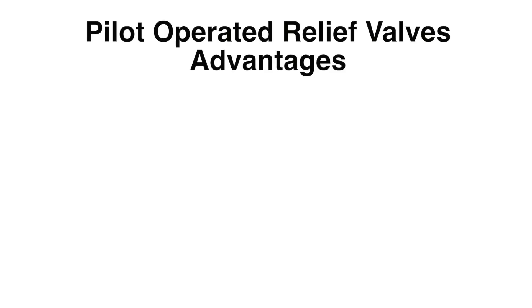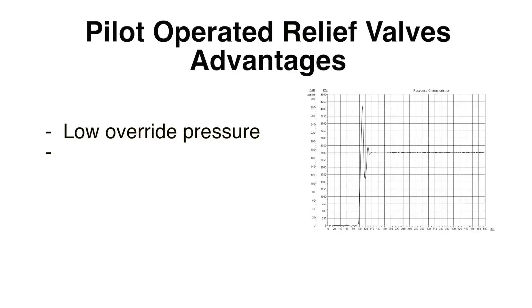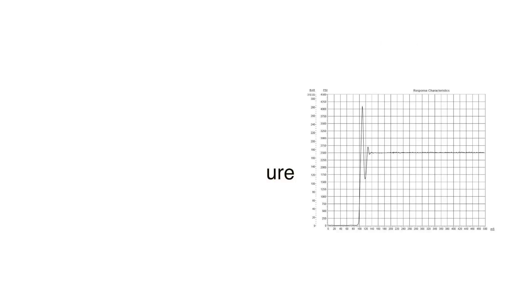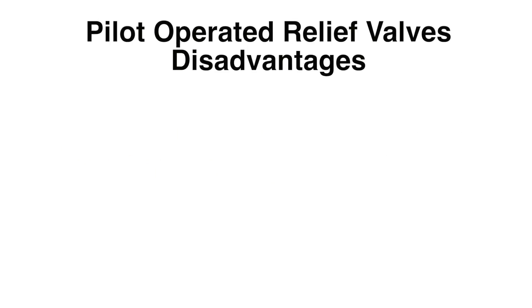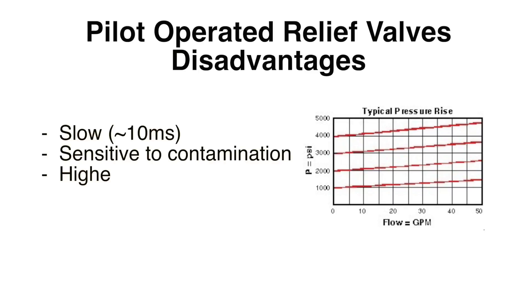Comparing pilot operated relief valves to direct acting valves, you'll notice some differences. Pilot operated valves have lower hysteresis, lower override pressure, and are generally adjustable under pressure. Relatively speaking, pilot operated valves are much slower than their direct acting cousins. They are also sensitive to contamination and have higher leakage rates.